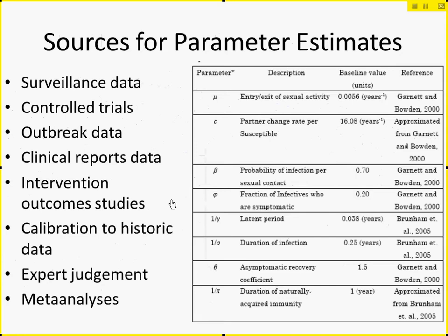Calibration does involve seeking to gain estimates for parameters that are less well-known. Frequently there's a variety of data sources we may have already used. We often will have really sweated details about estimates for model parameters, drawing them from the literature, from surveillance data, large-scale datasets such as run by StatsCan, from reports of outbreaks such as the number of cases of H1N1 over time in the Vancouver area, from clinical data, and from results of interventions.